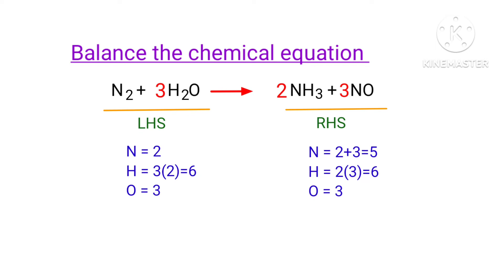The oxygen atoms are balanced. Now we need to balance the nitrogen atoms. To do this, we need to put a coefficient of five by two in front of N2.